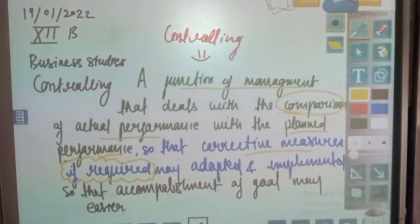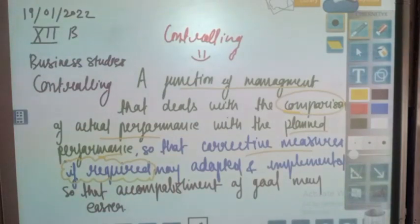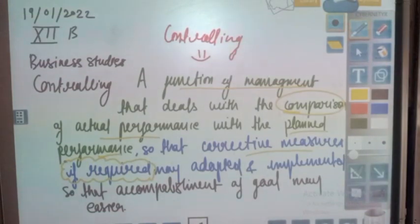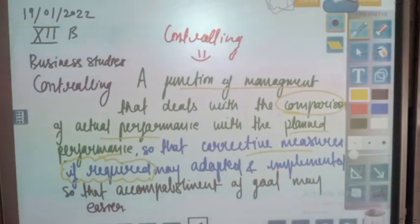Controlling is a kind of management function, which means that the standard performance — the ideal or planned performance — of our organization is compared with our employees' actual performance.